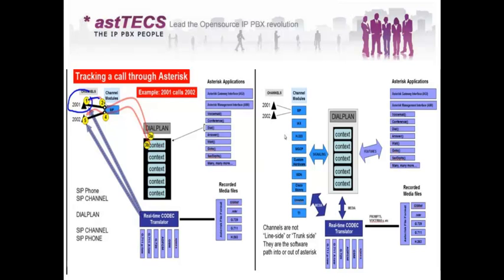This is a simple way which explains how an extension-to-extension call utilizes all the APIs in Asterisk. The same can be seen in the other diagram: 2001 calls 2002, both are SIP entities, so the SIP channel module is used via the Channel API. The call is passed to the corresponding dial plan context, and from there the Application API, Codec Translation API, and File Format API are all utilized.